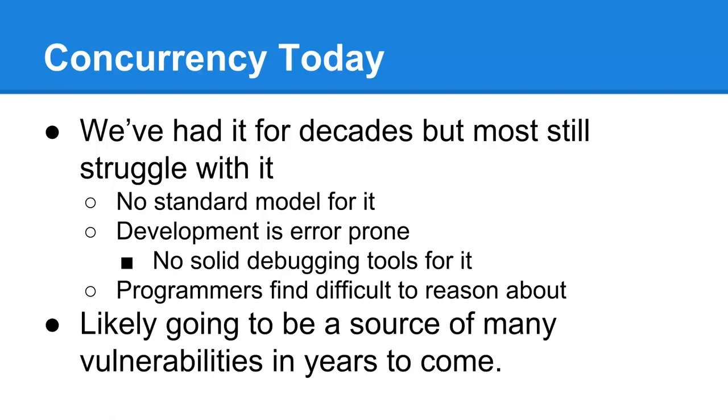We've struggled with concurrency for decades, and there's still no standard model for it, as far as I know. Development is still very error-prone. There's not any that I know of solid debugging tools that work for the general case in this context. It's hard for programmers to reason about, especially in a bug-hunting sense, because any manual process doesn't really scale well with the number of threads you have. I've had to do bug-hunting on something that had 255 threads to find race conditions and memory leaks on it. It took months of my life to do. This is still likely going to be a source of many vulnerabilities in years to come. You can't fuzz for these things. You can't do symbolic execution or any automated vulnerability analysis techniques to discover these things. They kind of just occur.